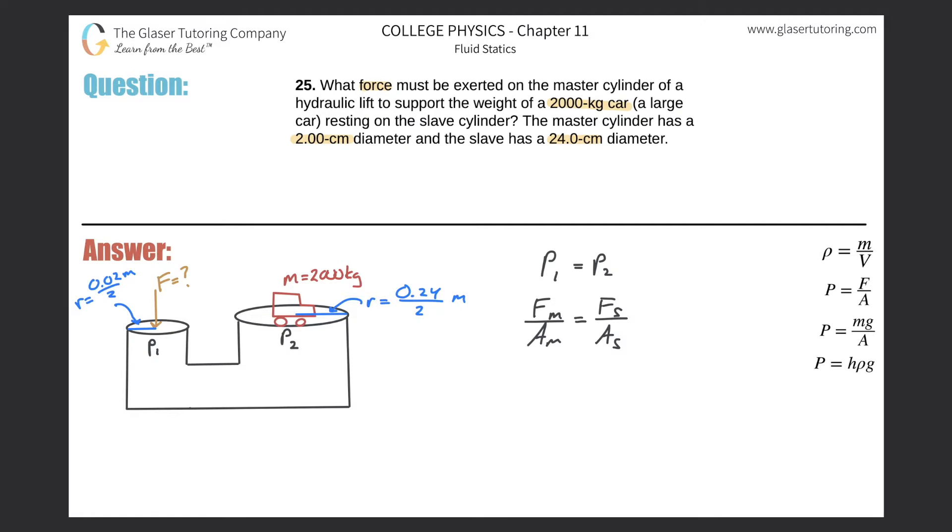So if I want to find the force of the master cylinder, all I got to do is solve this equation for F_m. So F_m will equal F_s multiplied by A_m all over A_s. So this is really the formula. Now all we got to do is expand maybe a couple more terms and we're pretty good.